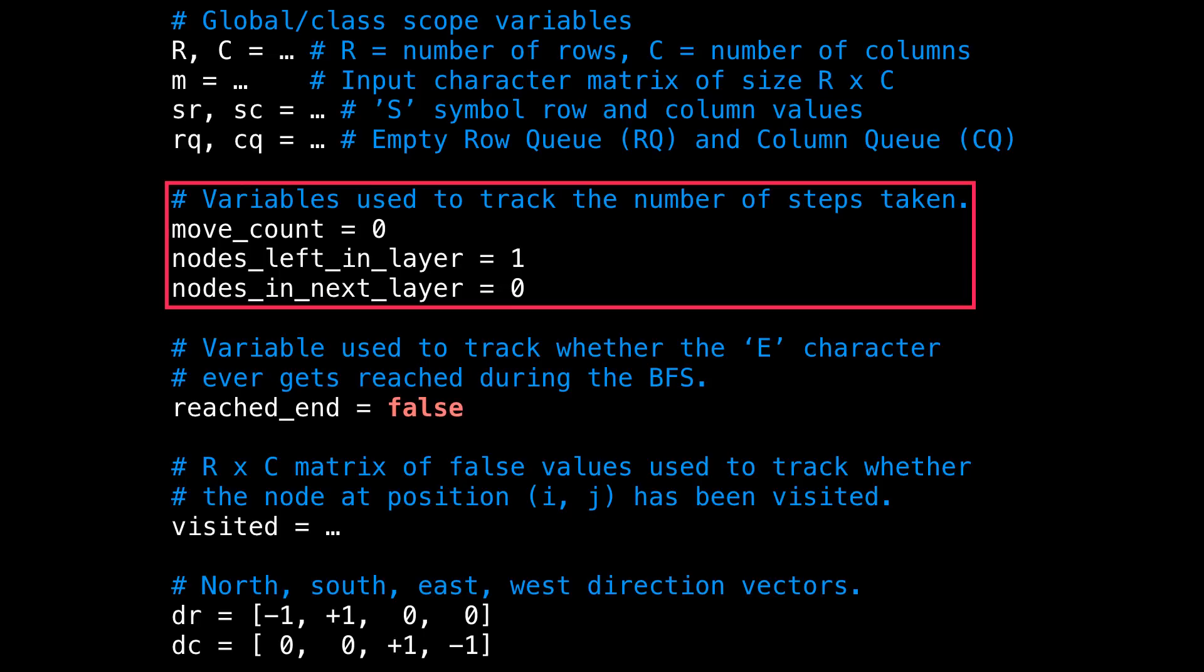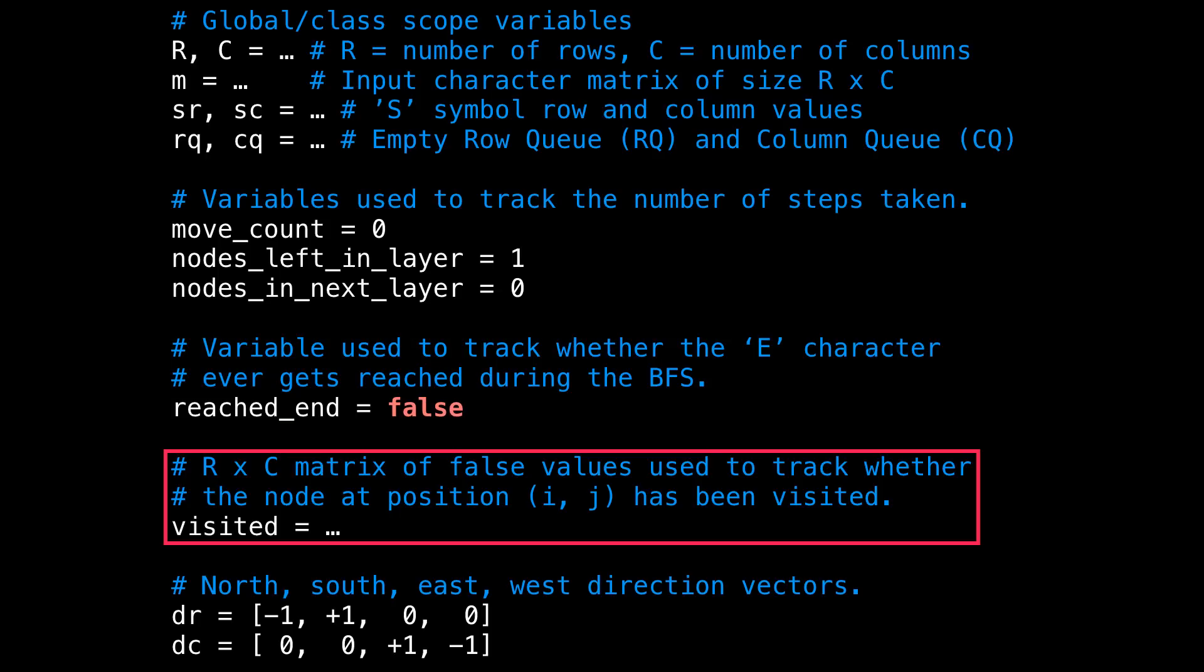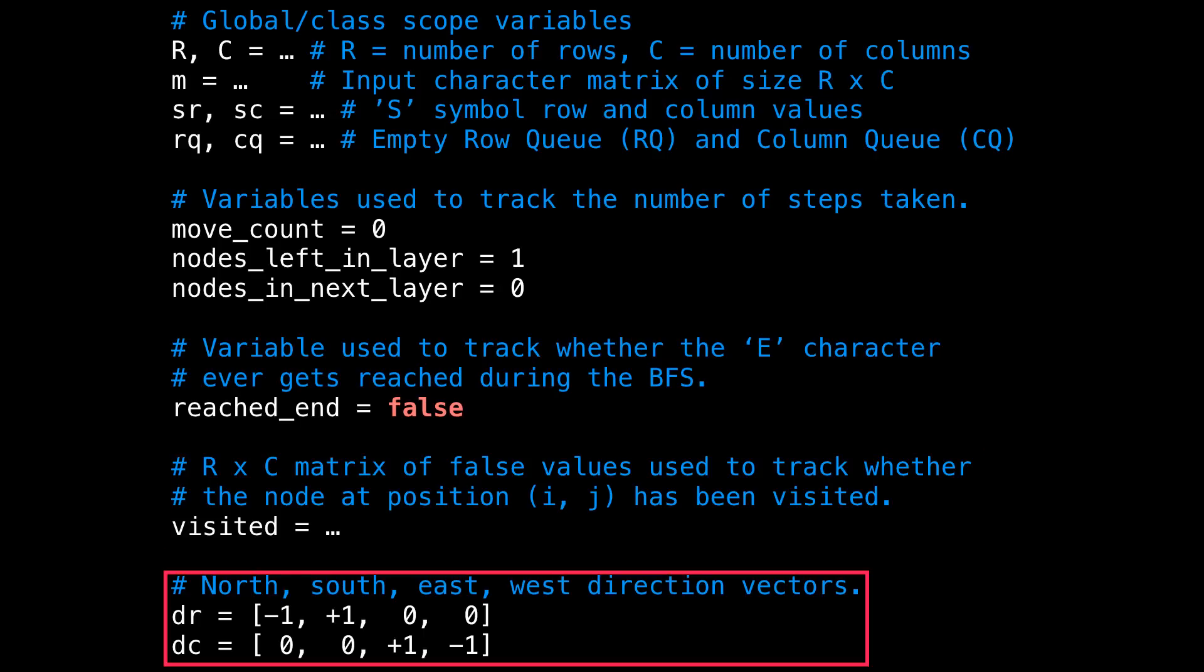In the next iteration, this will make more sense soon. reached_end tracks whether or not we have reached the end cell marked with an E. We're also going to make use of a visited matrix the same size as the input grid to track whether or not a cell has been visited, since we do not want to visit a cell multiple times.